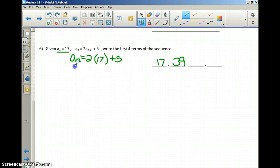That is now my second term. Now I want my third term. And again, recursive means I am recycling. I am now going to take 3 minus 1, or a_2, which is 39. I'm going to double that. I'm going to add 5 to that. And I am going to get 83.